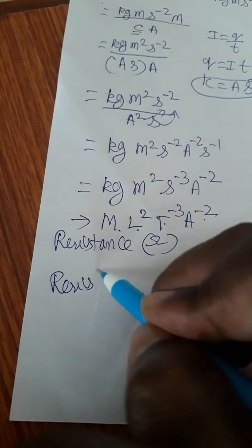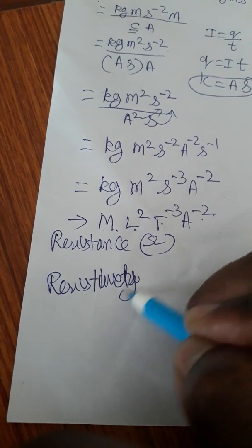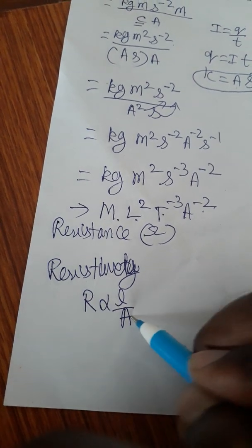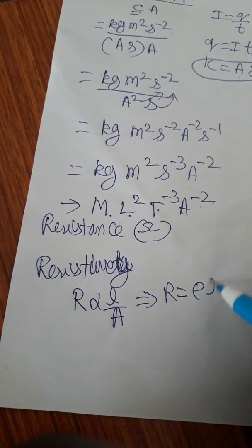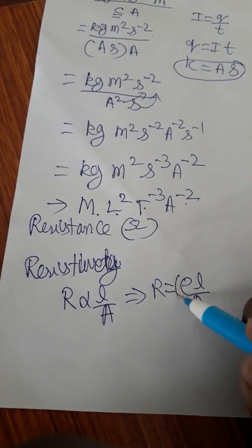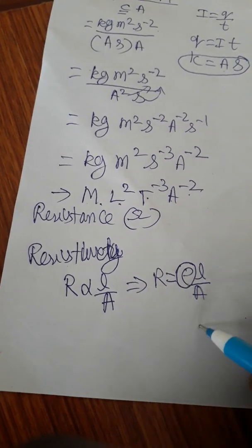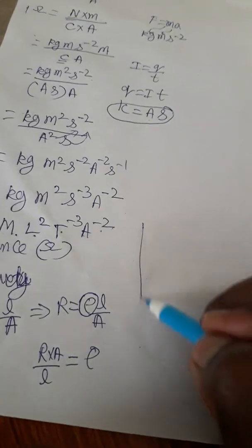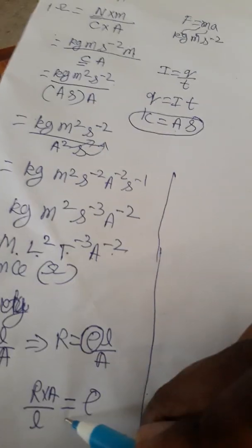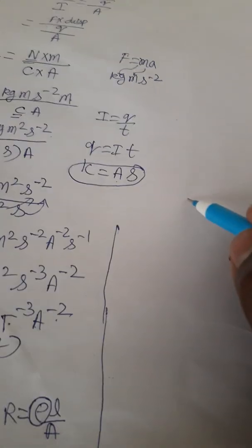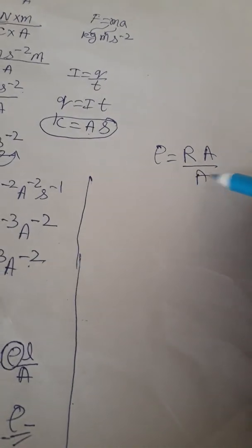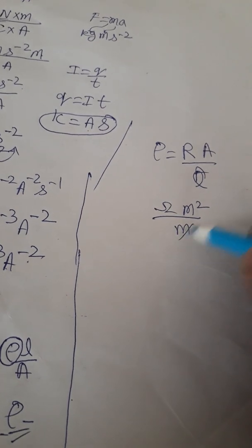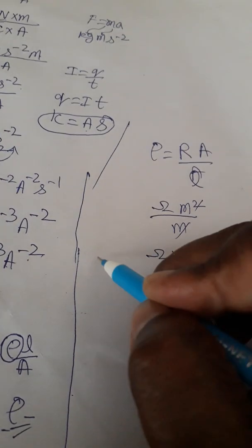Now, resistivity — how to find resistivity SI unit and dimension formula. We know resistance is directly proportional to length and inversely proportional to area, so resistance equals resistivity times length divided by area. Rearranging, resistivity equals R times A divided by L. Resistance is ohms, area is meter square, length is meter — meter cancels — giving ohm·meter as the SI unit of resistivity.